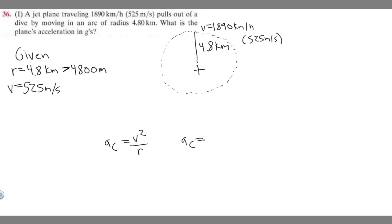So a_c is going to be equal to our velocity, which is 525 squared, over r, which is 4,800. And so this is going to give us our acceleration. And if you go ahead and do this, you're going to get 57.42, and this is going to be in meters per second squared.